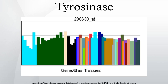Human tyrosinase is a single membrane-spanning transmembrane protein. In humans, tyrosinase is sorted into melanosomes and the catalytically active domain of the protein resides within melanosomes. Only a small, enzymatically inessential part of the protein extends into the cytoplasm of the melanocyte. As opposed to fungal tyrosinase, human tyrosinase is a membrane-bound glycoprotein with 13% carbohydrate content.